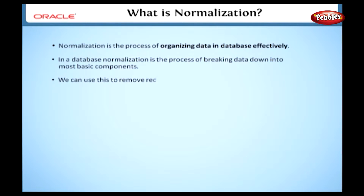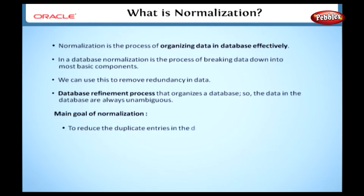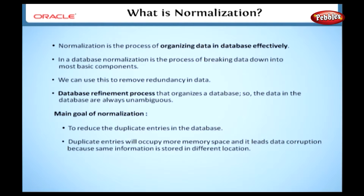We can use this to remove redundancy in data. This process is a database refinement process that organizes a database so the data is always unambiguous. The main goal of normalization is to reduce duplicate entries in the database. These duplicate entries occupy more memory space and lead to data corruption because the same information is stored in different locations. Normalization is the process to avoid these problems.